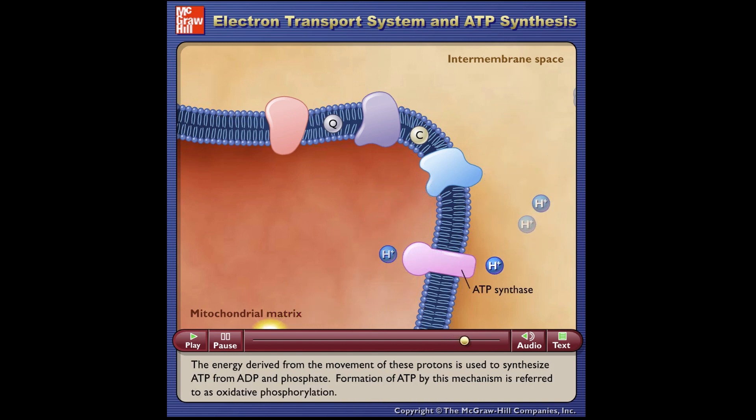The energy derived from the movement of these protons is used to synthesize ATP from ADP and phosphate. Formation of ATP by this mechanism is referred to as oxidative phosphorylation.